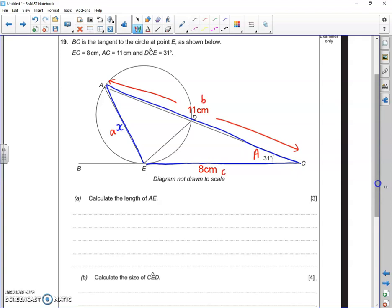It doesn't matter which way around they go, it should still work. And the cosine rule formula is that A squared equals B squared plus C squared minus 2BC cos A.